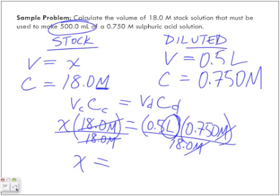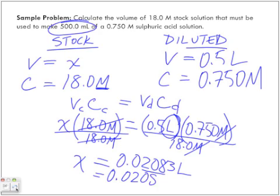0.02083, and it's in liters. What are the least number of significant digits in my question? Three. So I want the 208, so it becomes 0.0208 liters.